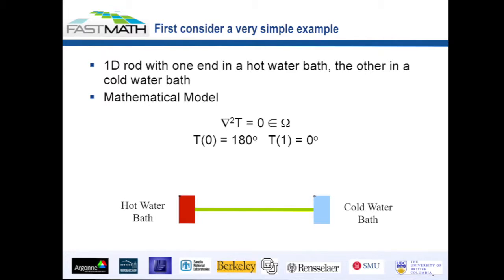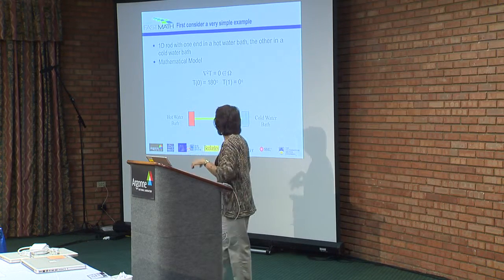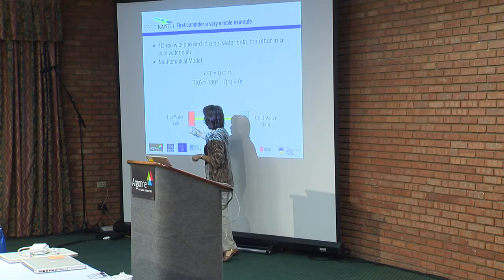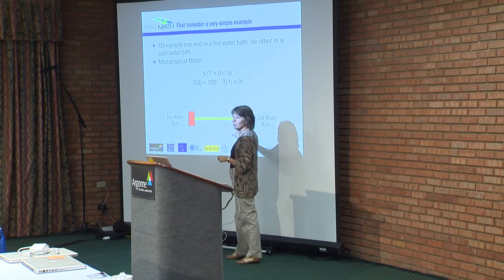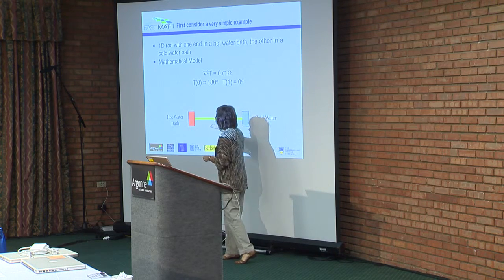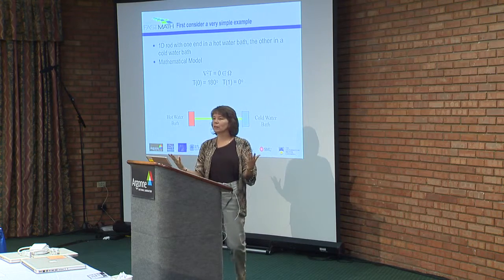We're first going to start with what everybody learns in numerical analysis 101. Consider a one-dimensional rod: you put one end of that rod in a hot water bath and the other end in a cold water bath. Eventually, over time, that rod will equilibrate so that one end is the same temperature as the hot water, the other end is the same temperature as the cold water, and there's a gradient in between those two temperatures. Everybody understands that intuitively.